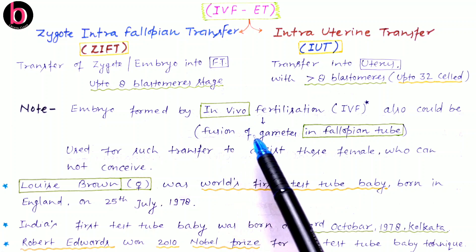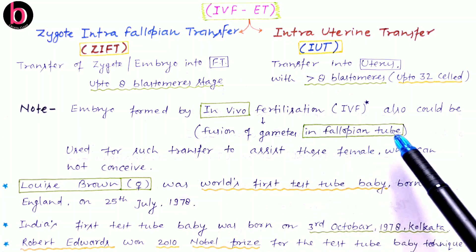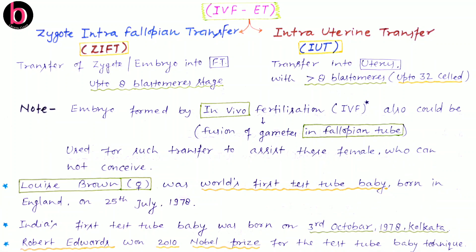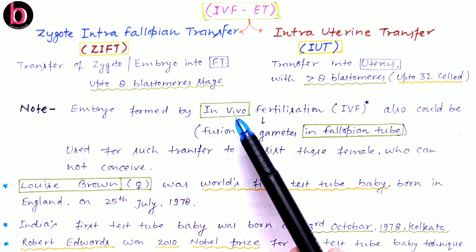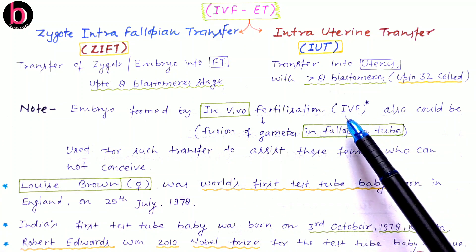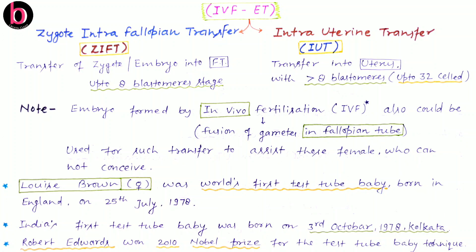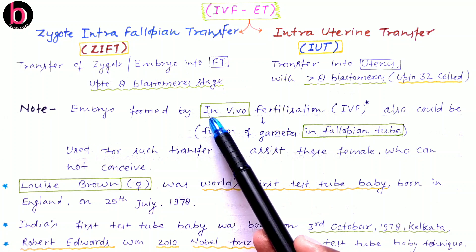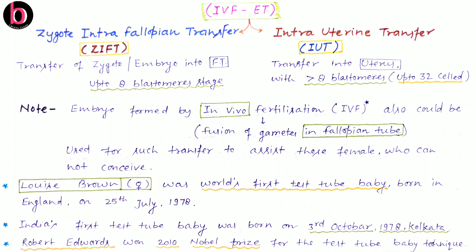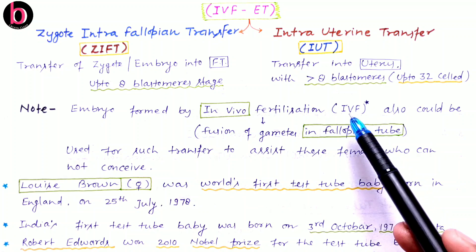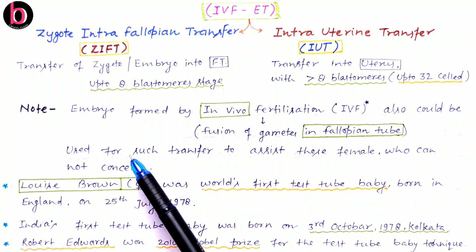An interesting point: embryo formed by in vivo fertilization can also be used for such transfers. In vivo fertilization is when fusion of male and female gametes occurs inside the fallopian tube — specifically the ampullary region — under natural conditions inside the body. When fertilization occurs outside the body in an artificial medium, this is in vitro. IVF usually refers to in vitro fertilization, though both share the same initials, which can cause some confusion.